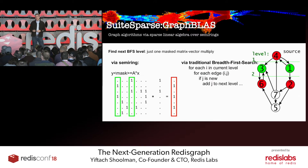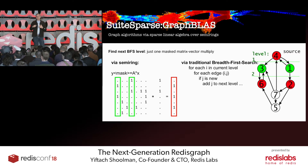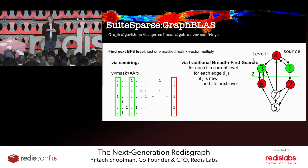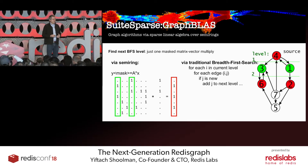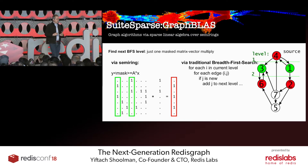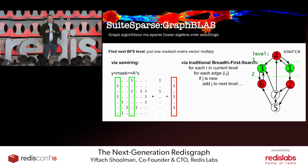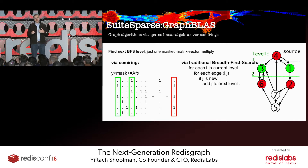GraphBLAS is based on the idea that there is a very fundamental, deep connection between graph algorithms and matrix algebra — specifically matrix algebra on semirings and sparse matrix computations. This is a community effort; the mathematical observation has gone back a long time, and about 10 years ago a discussion started in the community over how to make this real.